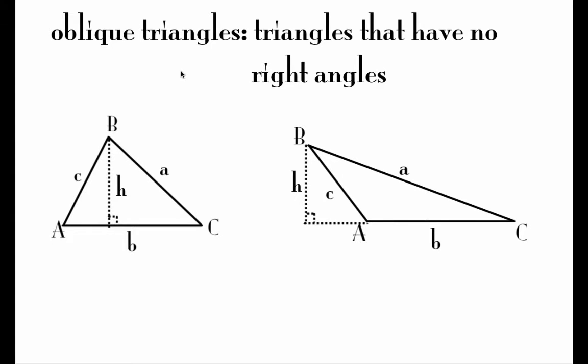An oblique triangle is just a triangle that doesn't have any right angles in it. It could be an acute triangle like is pictured on the left, or it could be an obtuse triangle like we have pictured on the right-hand side.